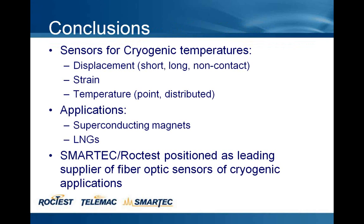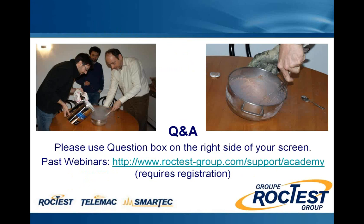In conclusion, I have introduced several sensors that can measure displacement, strain, and temperature in cryogenic conditions. Main applications are monitoring of superconducting magnets and other cryogenic applications, as well as liquefied natural gas tanks and pipelines. SMARTEC and ROCTEST are positioned as leaders in fiber optic sensors for cryogenic applications. And as a final note — here is instant ice cream made with liquid nitrogen: if you purchase any of these sensors and come for a factory acceptance test, we will let you taste this delicious coffee ice cream.